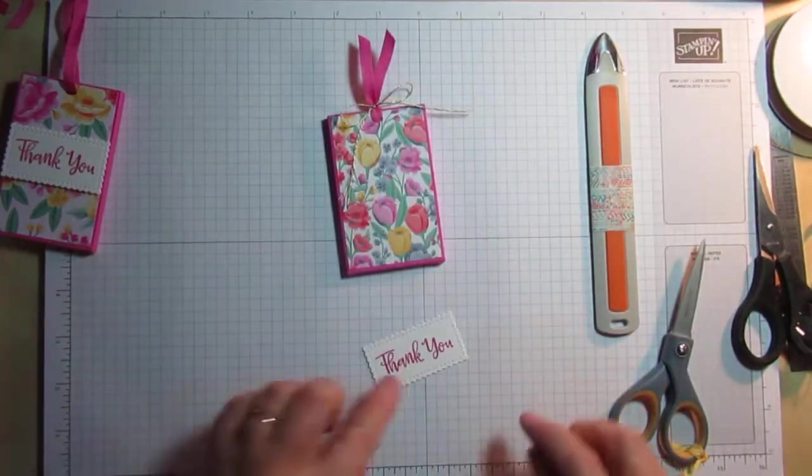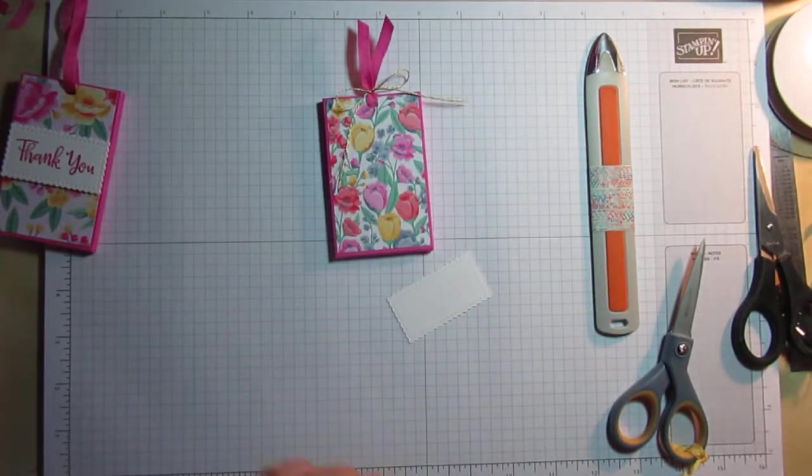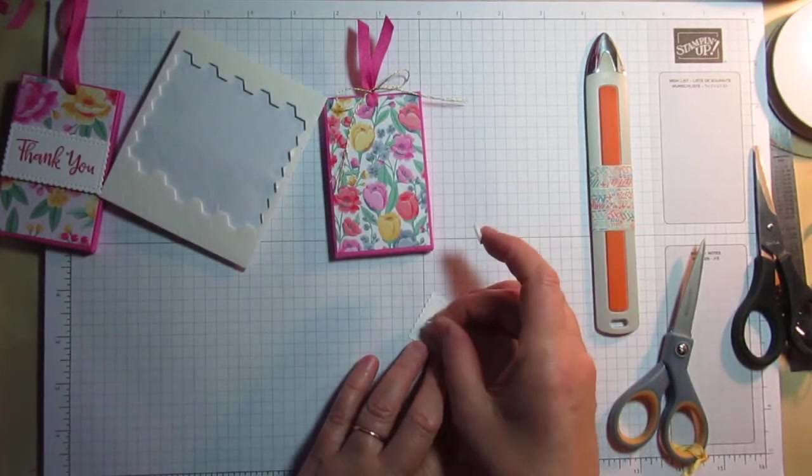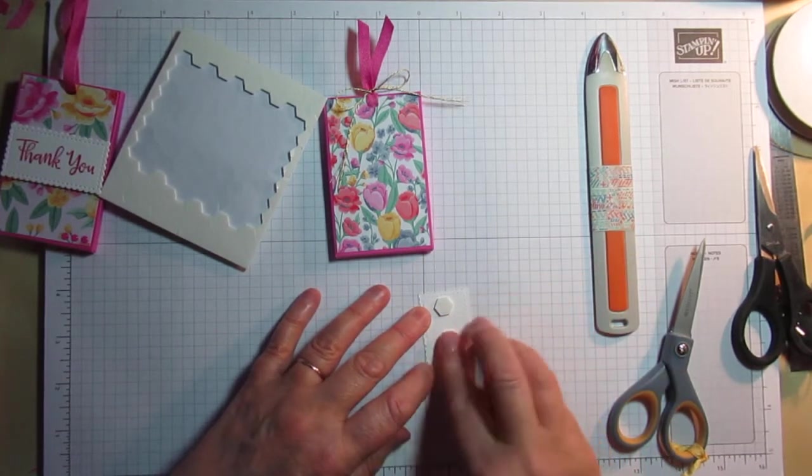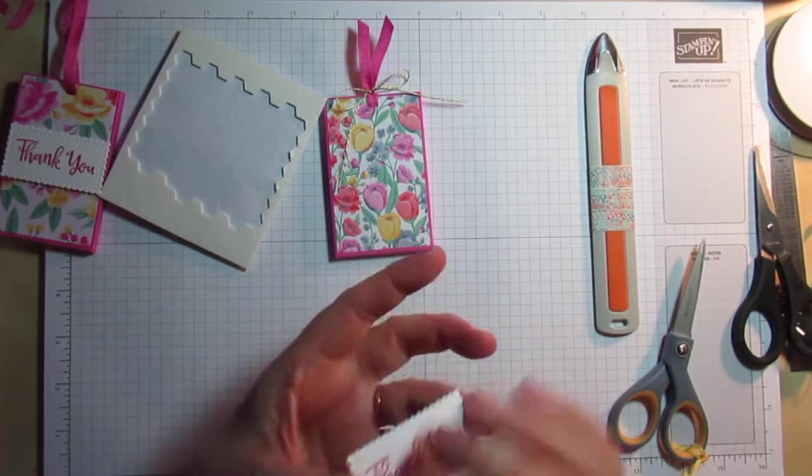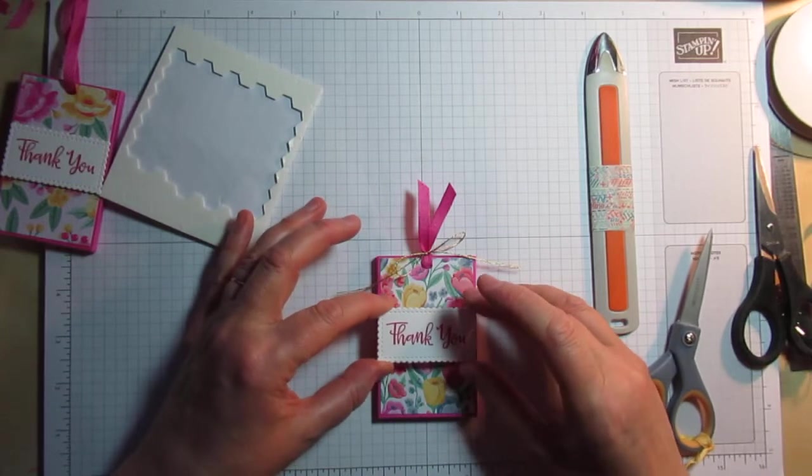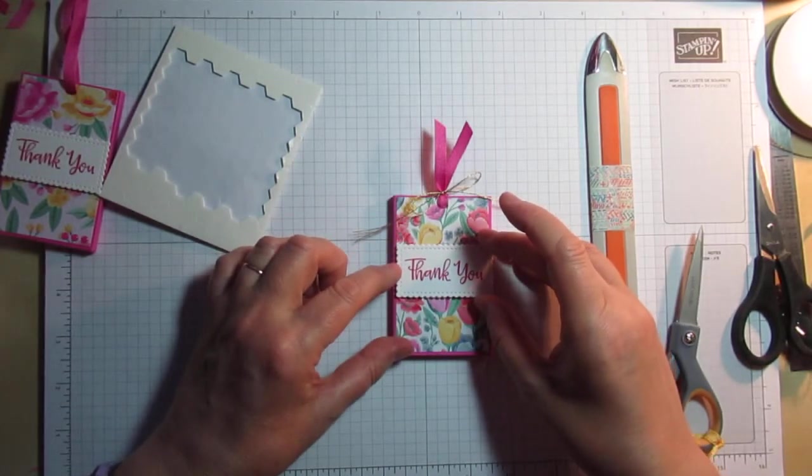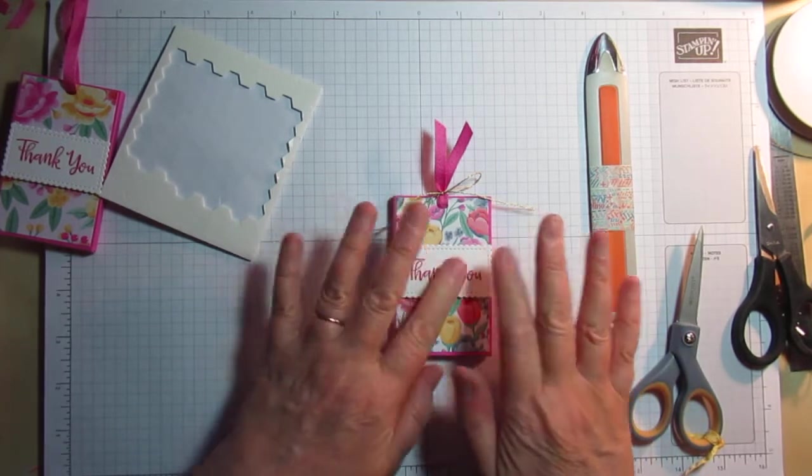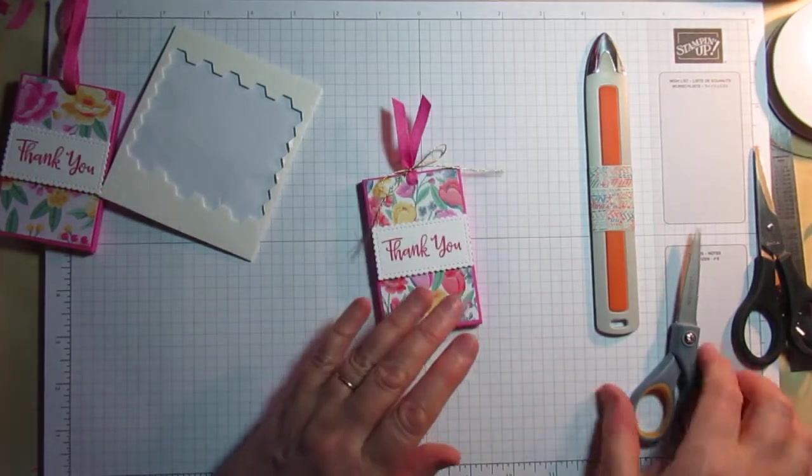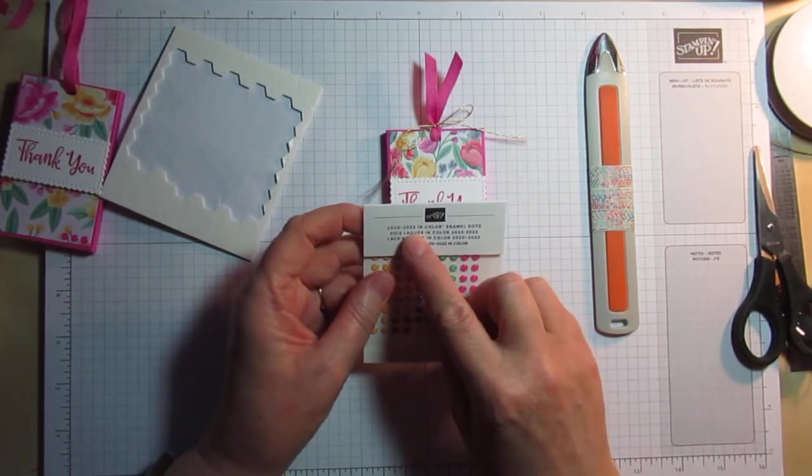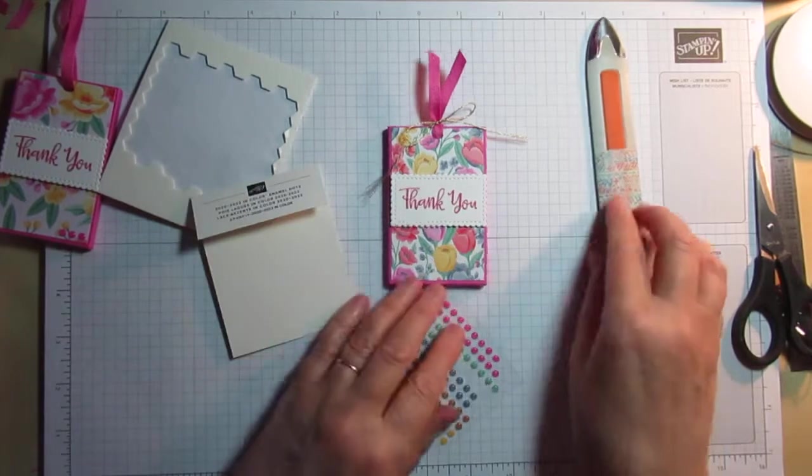And then all that's left for me to do is pop my thank you onto the front. So, using dimensionals, one, two, three, I'm going to pop one at that side and one at that side and one right in the middle. And stick that, thank you. It pretty much is exactly the same width as the box, which was a happy discovery. It wasn't planned that way at all.